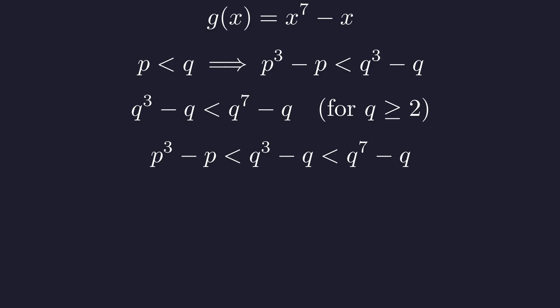Combining these inequalities, we find that p cubed minus p is strictly less than q to the 7th minus q. This result contradicts our initial equation, which states that these two expressions are equal. Therefore, our initial assumption that p is less than q must be false.